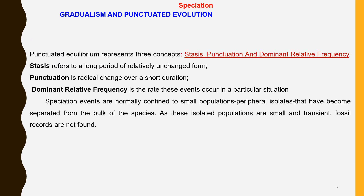The punctuated equilibrium embodies three major concepts: stasis, punctuation, and dominant relative frequency. Stasis refers to a very long period of relatively unchanged form, with substantially no change over millions of years. Punctuation is the radical change that occurs over a short period of time. Dominant relative frequency is the rate of these events occurring in a particular situation.